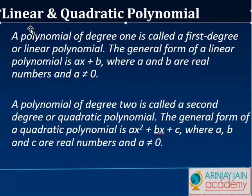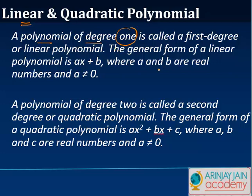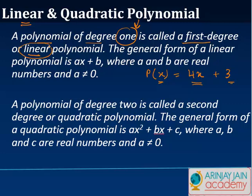The next one is a linear polynomial — a polynomial of degree one, where the highest power of a variable is one. So something like four x plus three, where the highest degree of x is one. A polynomial of degree one is called a first degree or a linear polynomial. The general form is ax plus b, where a and b are real numbers and a is not equal to zero.